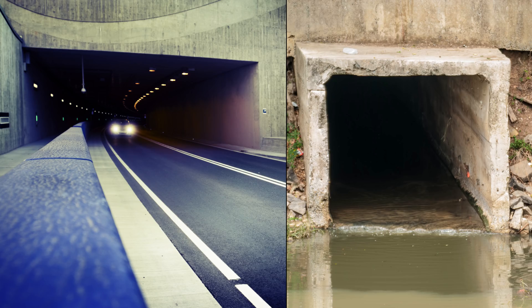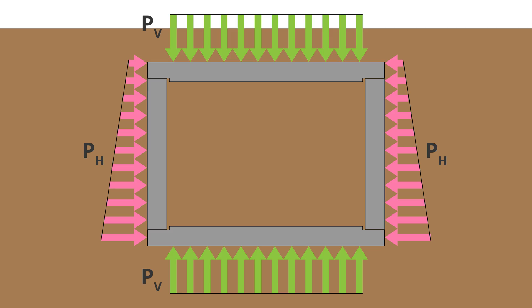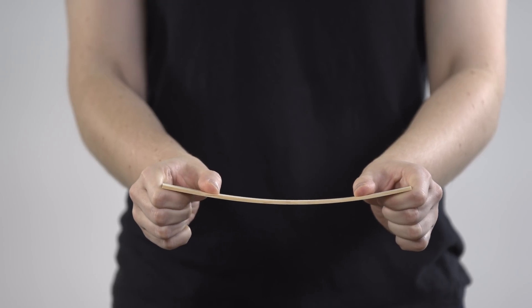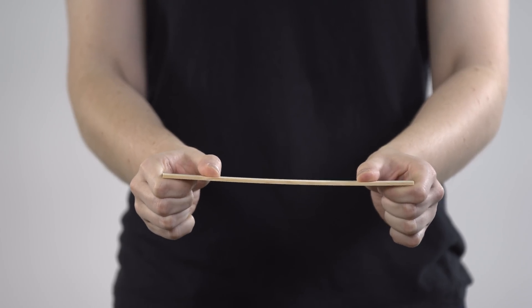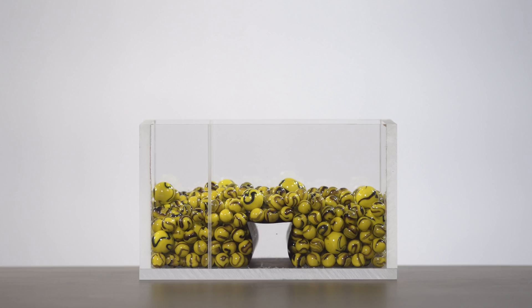Another popular design is the box-shaped tunnel or culvert. Because its walls are flat, they must carry the applied loads by bending or beam action. And, as this model shows, they tend to bend inwards.